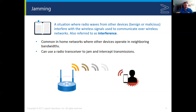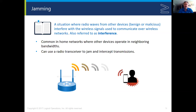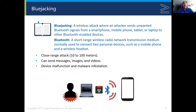Jamming can also be used in what's called a sinkhole attack. If someone is attempting a sinkhole attack against a corporation, they could use jamming to force employees to connect to their rogue access point. So jamming can be used to force users onto rogue access points, evil twins, or some other access point that an attacker has set up.